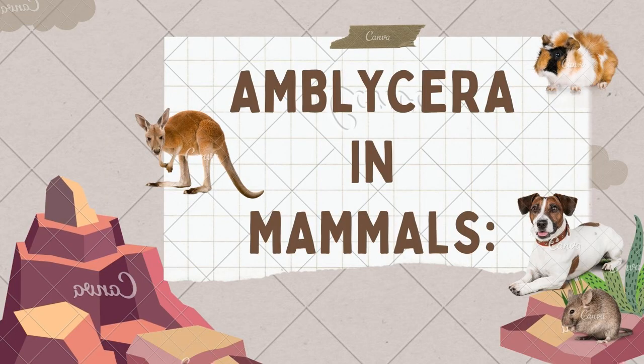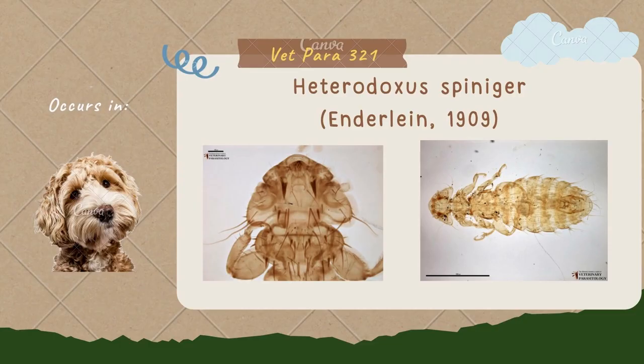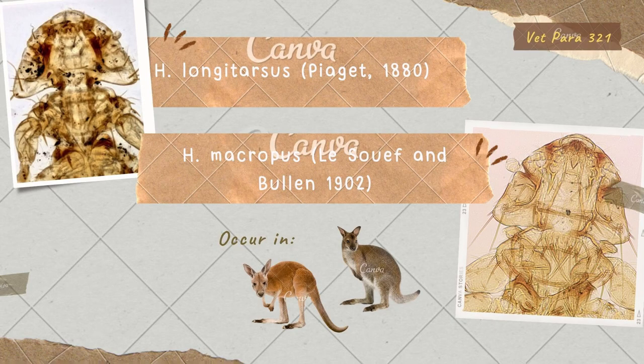For Amblycera in mammals, the species Gyropus ovalis, Gliricola porcelli, and Trimenopon hispidum may all be found on guinea pigs, and some may occur in rodents. Heterodoxus spiniger is common on dogs, especially in warm countries, while Heterodoxus longitarsus and Heterodoxus macropus occur in kangaroos and wallabies.